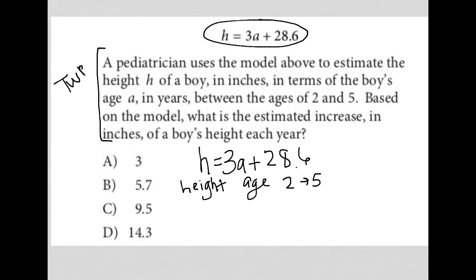Well, the increase in inches of a boy's height each year, I know that this formula is given for height. So what if I actually just found his height every year between the ages of 2 and 5? So when a is equal to 2, then h is equal to, let's see, 6, because 3 times 2 would be 6. 6 plus 28.6 would be 34.6.